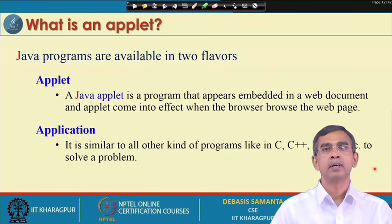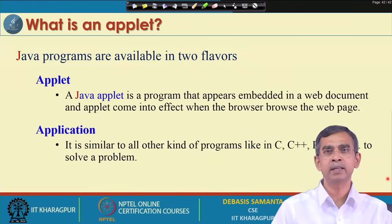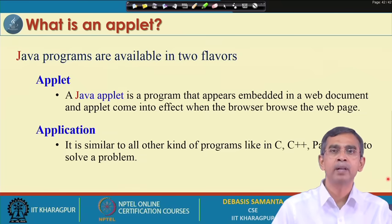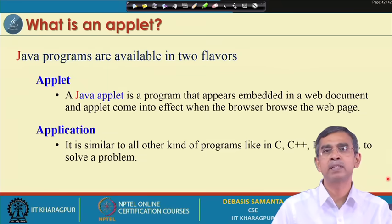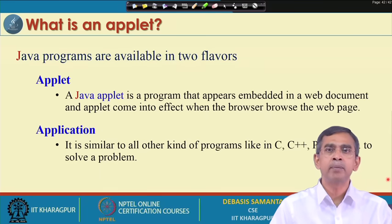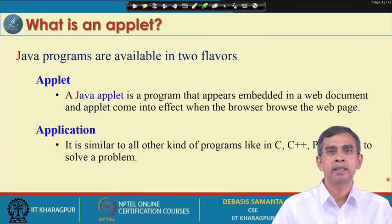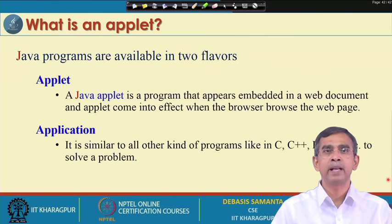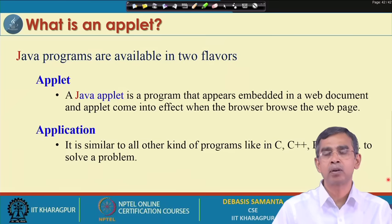There are two types of programming. The application, which we have already learned, is similar to more simple programs — basically like C, C++, or Python. The Applet is a little bit different type of program. Java is a unique programming language that supports both. The name 'Applet' implies something small — a small application is called a Java Applet.